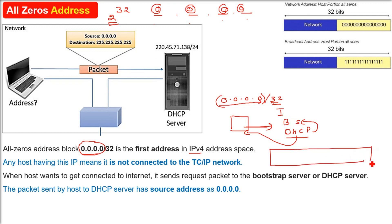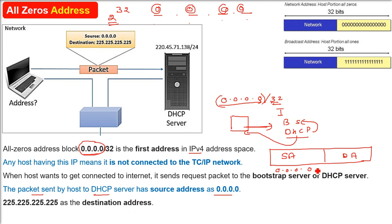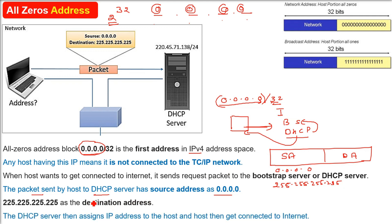The packet sent by the host to the DHCP server will have a source address of 0.0.0.0. When the DHCP server sees that the packet is coming with source address 0.0.0.0 and destination address 255.255.255.255, it understands this is a host requesting an IP address.